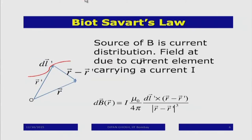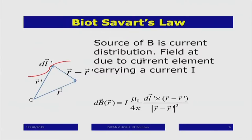The source of magnetic field being a steady current, I need to formulate a law as we did for electrostatics with Coulomb's law — if there is a charge, what is the expression for the electric field? In this case the corresponding law is called the Biot-Savart law. The source of the magnetic field is basically a current distribution.